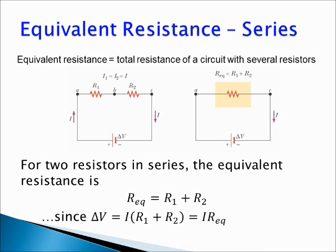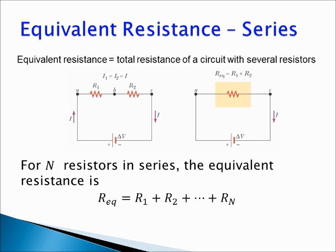Another useful concept is equivalent resistance. Very often we have several elements connected together and wish to know the total resistance of the whole circuit. For two resistors in series, the equivalent resistance Req is equal to R1 + R2, because ΔV across R1 and R2 is equal to I·(R1 + R2). So R1 + R2 plays the role of the total or equivalent resistance. If we have N resistors in series, the equivalent resistance is equal to the sum of the individual resistances: Req = R1 + R2 + ... + Rn.